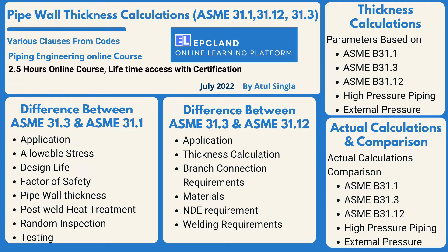Then we'll look into various parameters with respect to 31.1, 31.3, 31.12, high pressure piping, and external pressure piping. We'll look into what the various equations and clauses are with respect to these codes, so that we can understand how they differ with respect to the calculation of pipe wall thickness.